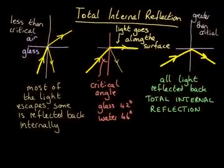When a ray of light passes from a denser medium to a rarer medium, the angle of refraction is more than the angle of incidence. If the angle of incidence is gradually increased from zero, the angle of refraction also increases.